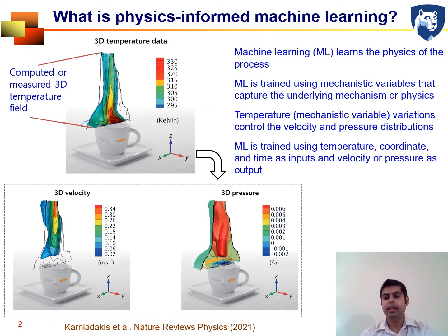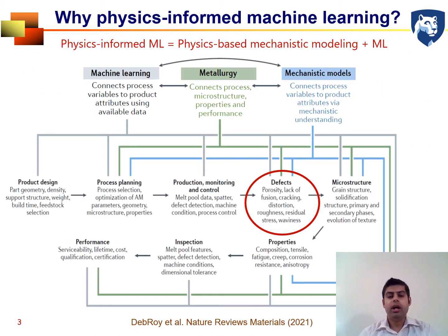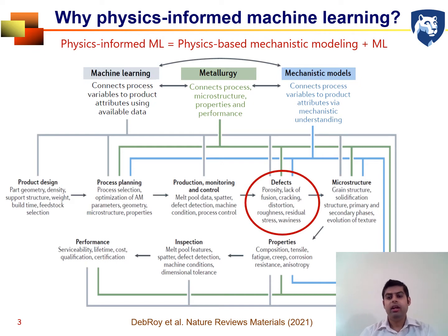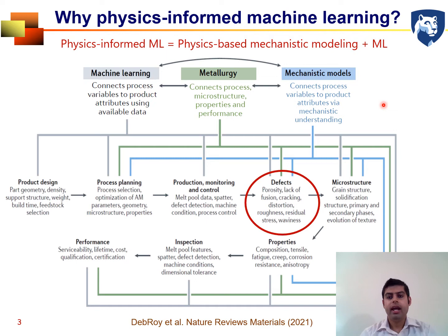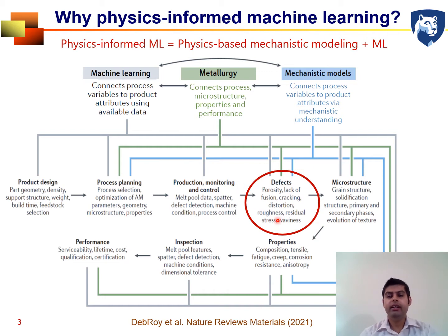The same concept can be applied in additive manufacturing to reduce defects. Physics-Informed Machine Learning is a combination of physics-based mechanistic modeling — which calculates the mechanistic variables — and machine learning. Throughout the product life cycle in additive manufacturing, both machine learning and mechanistic models are helpful, and a synergistic combination of machine learning, mechanistic modeling, and the principles of metallurgy is helpful to reduce defects.